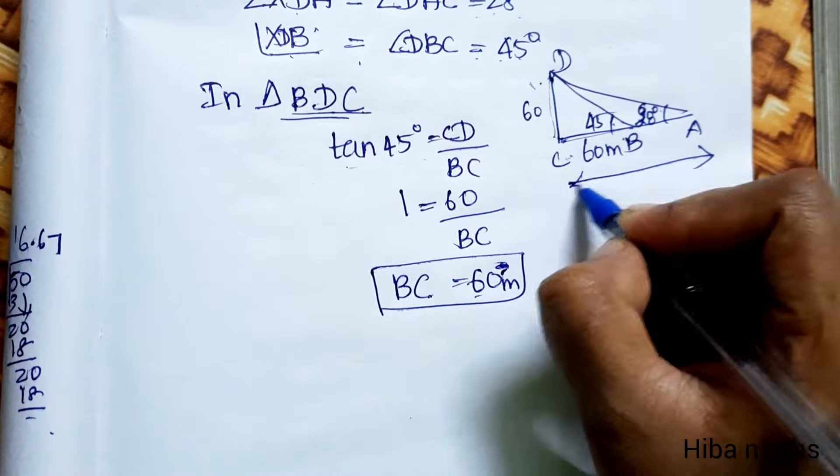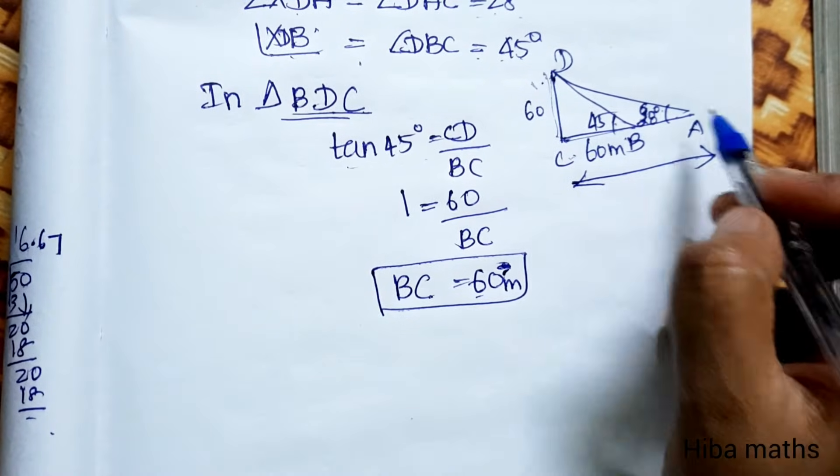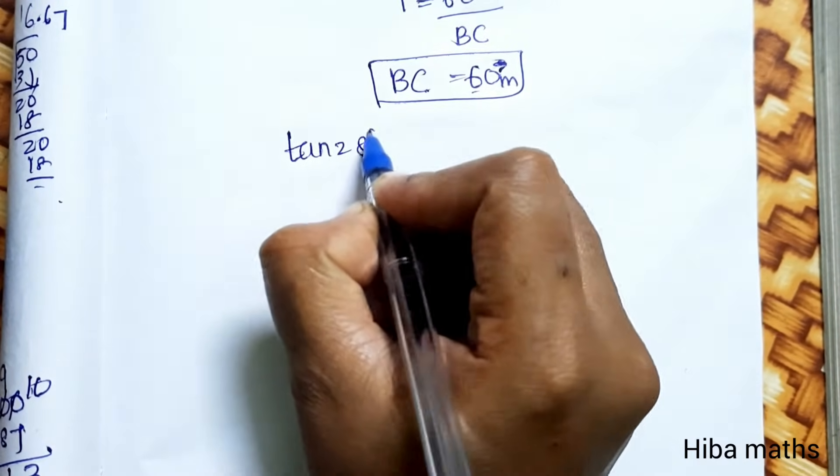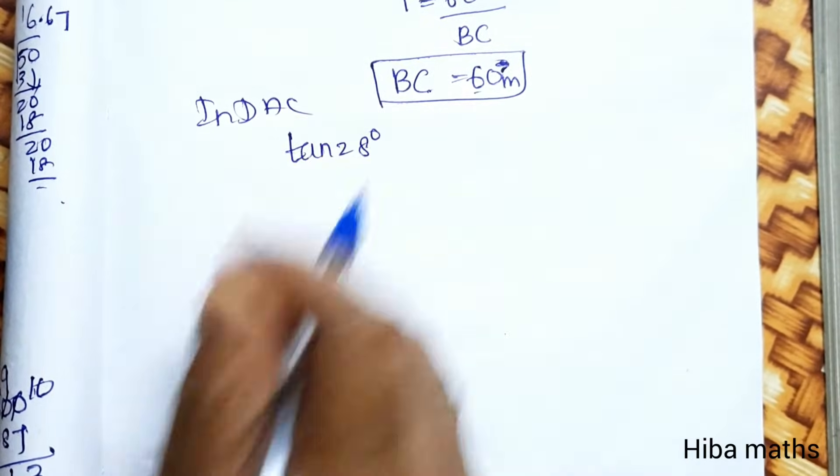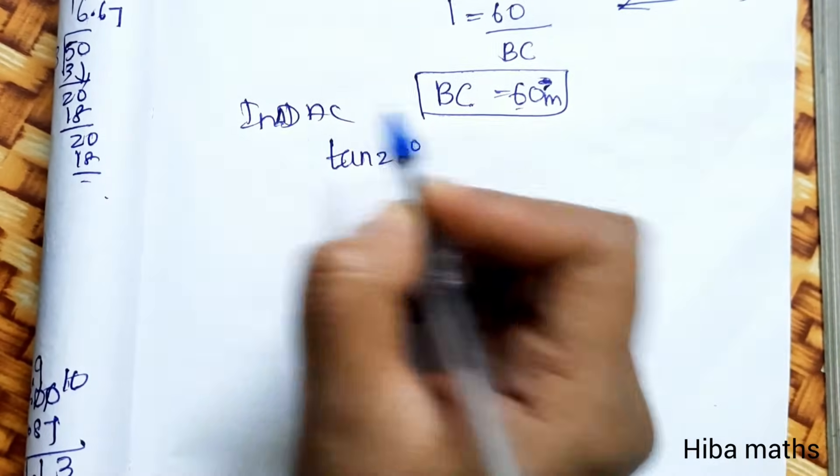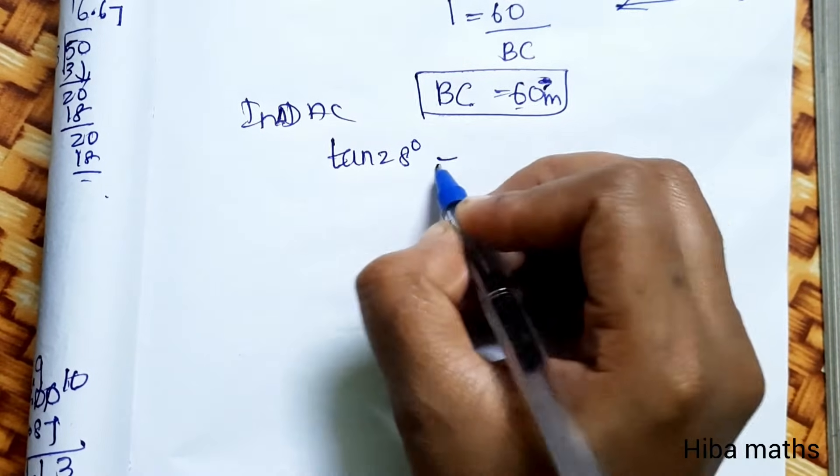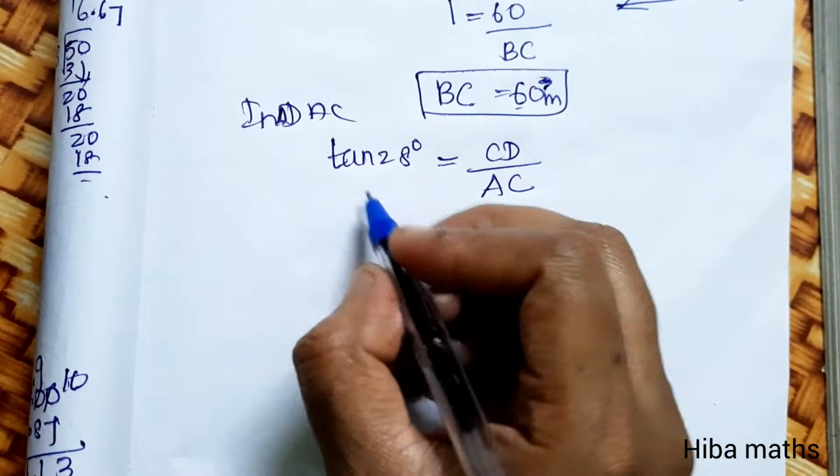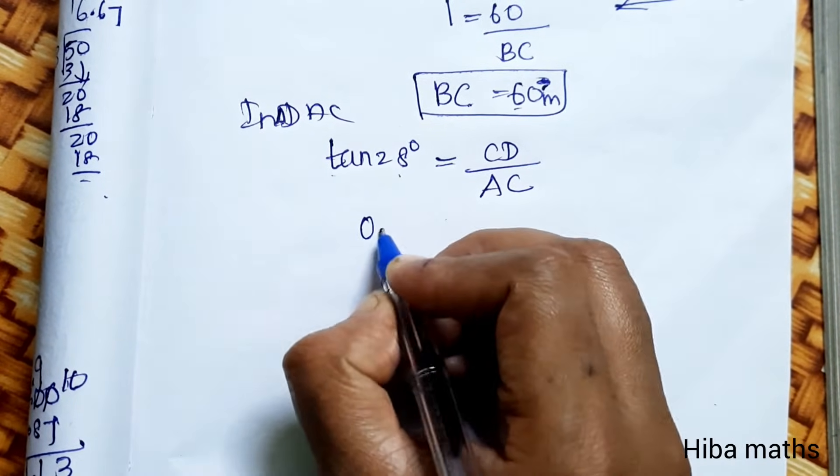Now in the right angled triangle ADC, tan 28 degrees. tan 28 value is 0.5317.